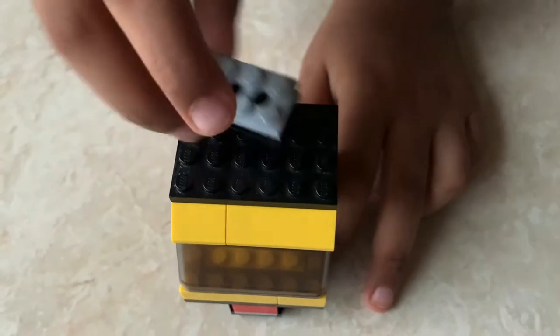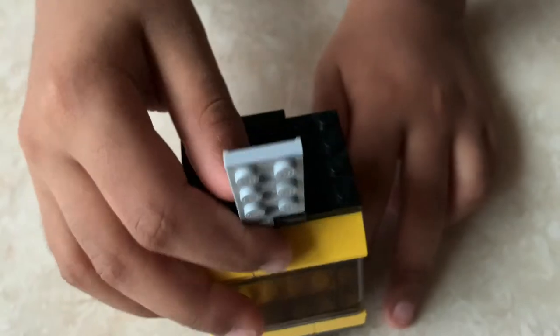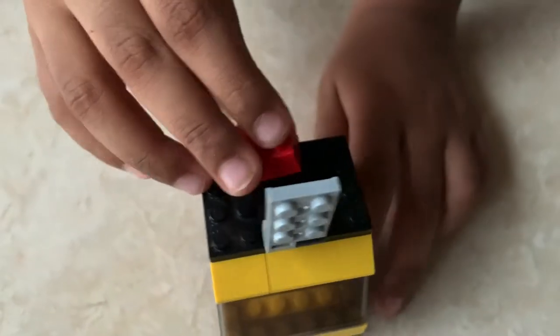Take it and place it like this backwards so it'll go like this. Now take this 2x2 brick and place it here.